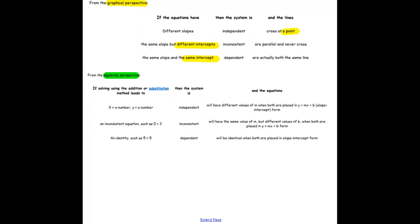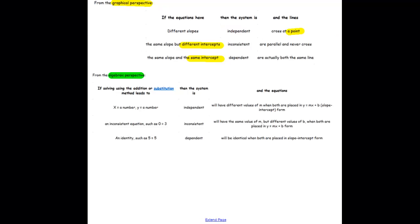From an algebraic perspective, if you're solving the equation using addition method or elimination or substitution, and you find that x and y are both a number, then it's going to be an independent, consistent system. We have a solution. If it is a situation where you're going to get 0 equals 3, that is obviously no solution, so that's inconsistent. And if we get the identity, then it's an infinite number of solutions or dependent.